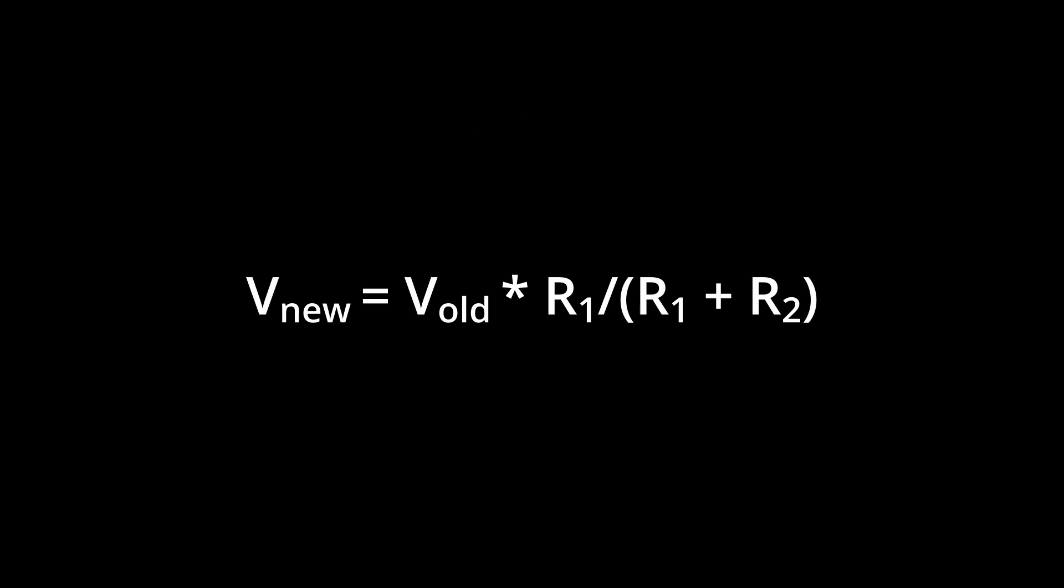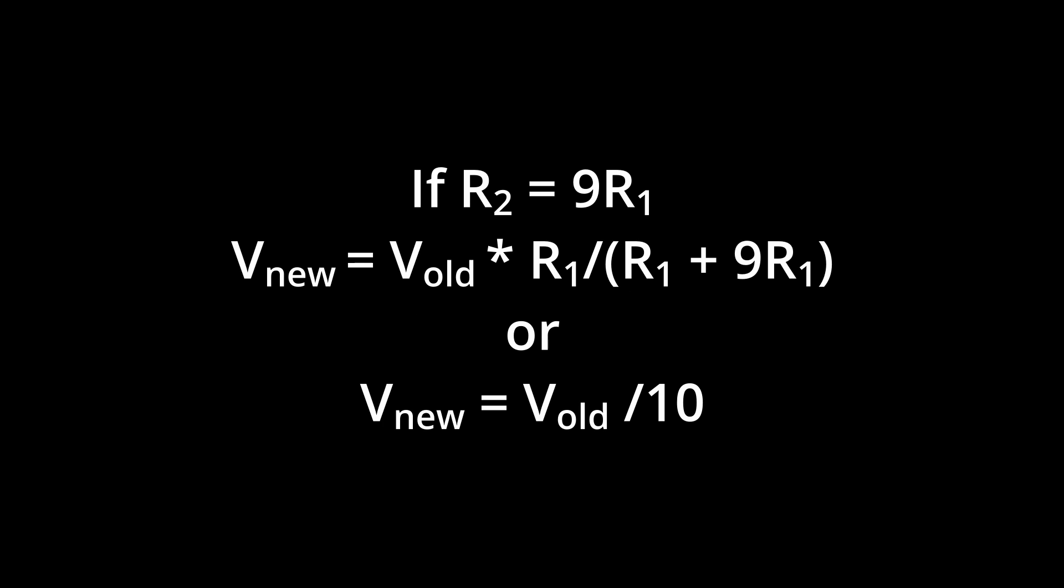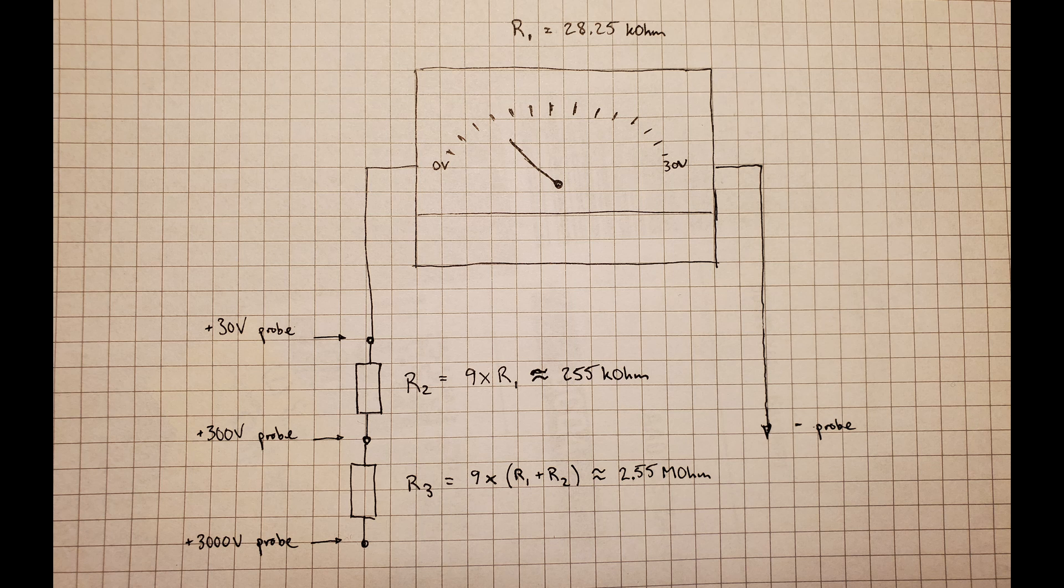In principle, if you wanted to get a 10 times reduction in the voltage readout, you would just need to add a resistor that is 9 times the internal resistance of the analog voltage diode. In my case, that resistance was 28.25 kOhms, so I needed 255 kOhms to increase the voltage range from 30 volts to 300 volts. Adding another 2.55 megaohm resistor in series would allow a readout of up to 3000 volts.